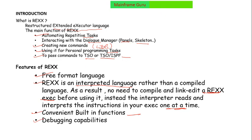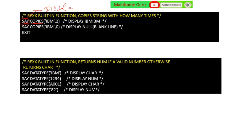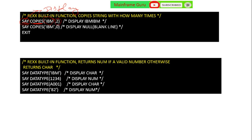Debugging capability is also available in REXX. The first built-in function is COPIES. SAY is a REXX instruction which displays data onto the terminal. The COPIES function is used to copy a string or character multiple times. For example, if you give 2, it will display IBM IBM. If you give 0, it will display only a blank line. If you give 3, it will display IBM IBM IBM.